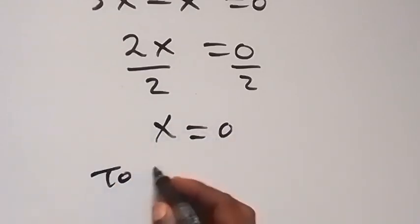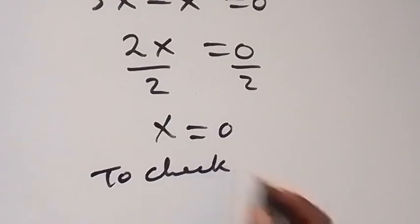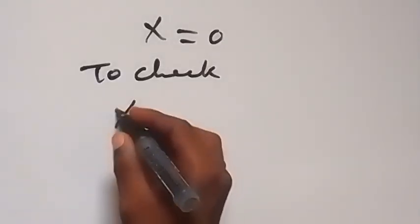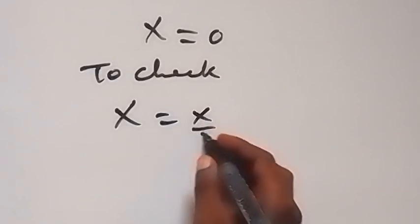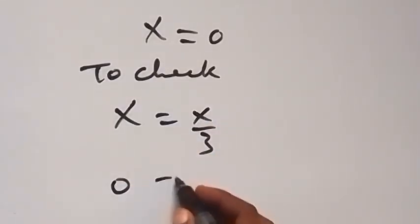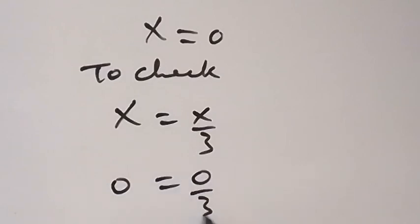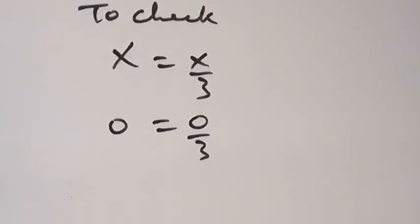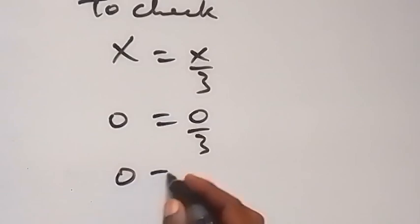To check from what we are given, we have x equals x over 3. So here we have 0 for x, so 0 equals 0 over 3. And 0 over 3 is still 0, so 0 equals 0.